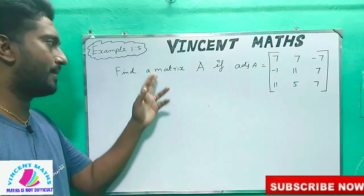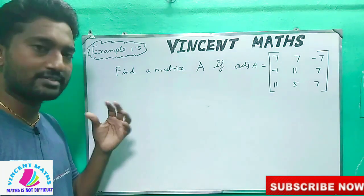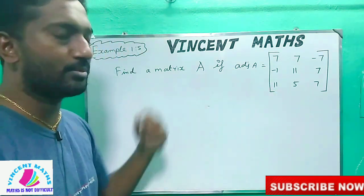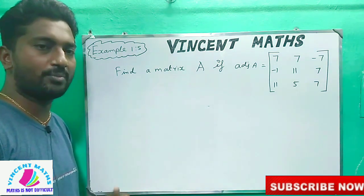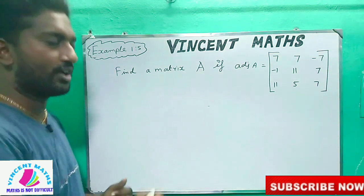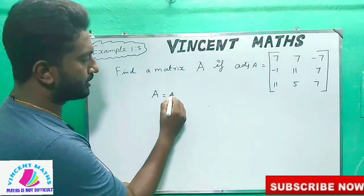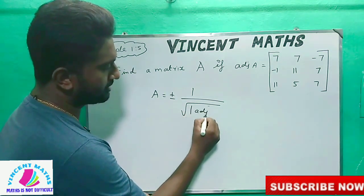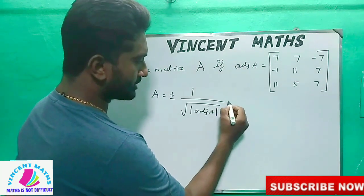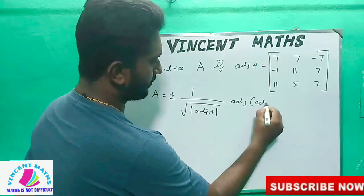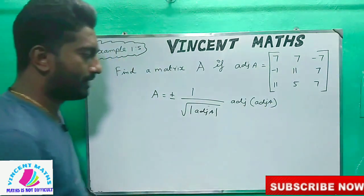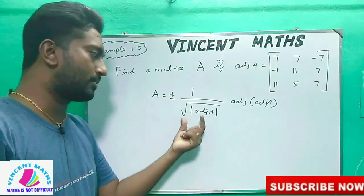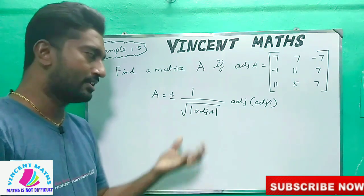We need to find a matrix A. What is the A matrix? The size of A — a negative number is coming inside the square root, which is a problem.